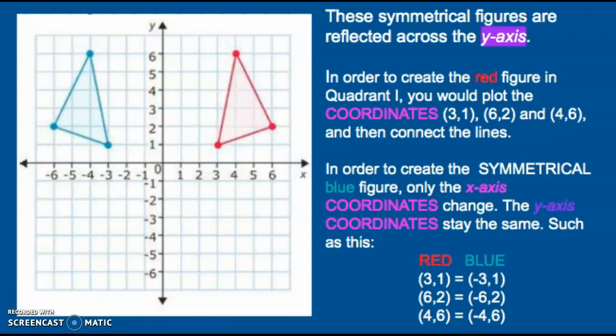In order to create the red figure in quadrant 1, you would plot the coordinates (3,1), (6,2), and (4,6), and then connect all the lines. In order to create the symmetrical blue figure, only the x-axis coordinates change. The y-axis coordinates stay the same, such as this.